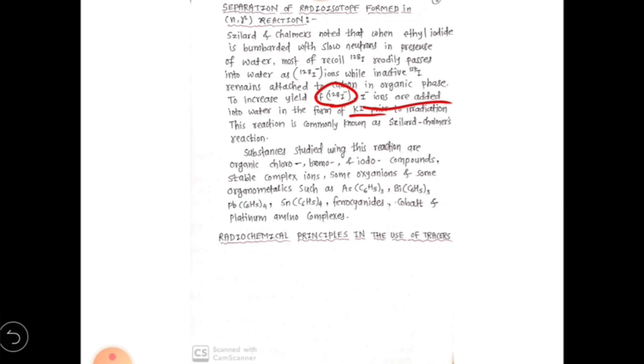This reaction in which the water contains potassium iodide and the ethyl iodide is bombarded with the help of neutron is commonly known as Szilard-Chalmers reaction. Many substances such as organic compounds like chloro-, bromo-, iodo-compounds and stable complex ions, some oxy-ions, organometallics such as arsenic triphenyl, bismuth triphenyl, lead tetraphenyl, stannous tetraphenyl, some ferrocyanides, cobalt and platinum amino complexes—such compounds can be studied by using this Szilard-Chalmers reaction.